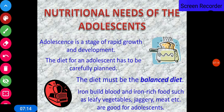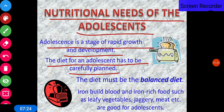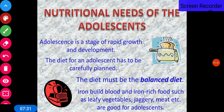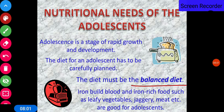Nutritional needs of adolescents: adolescence is a stage of rapid growth and development, so the diet for an adolescent has to be carefully planned and must be a balanced diet. That is why your mothers, parents, and teachers guide you to eat healthy food. A balanced diet supports physical changes, mental growth, intellectual growth, and hormonal development.